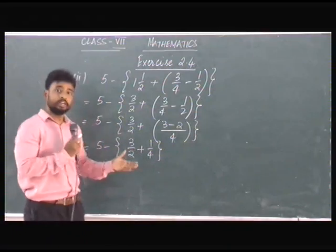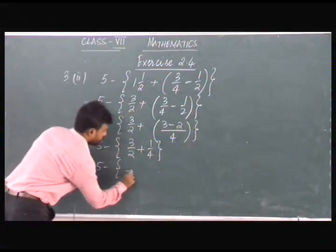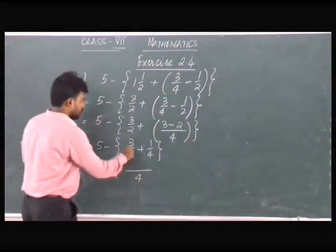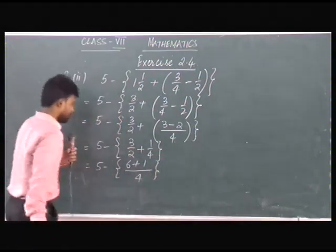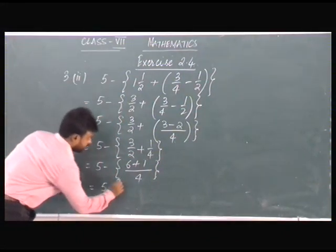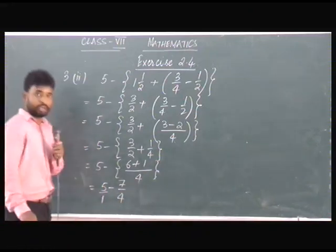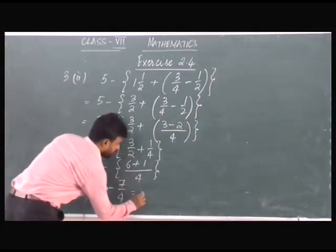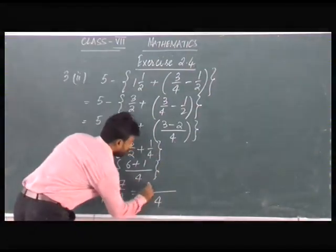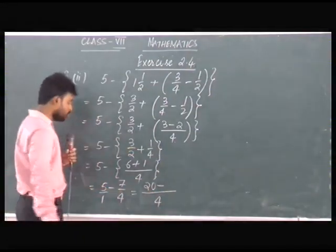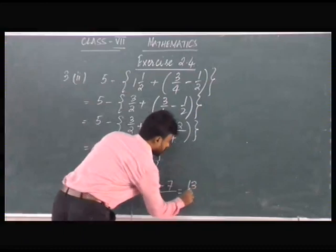Now we will solve what is there in the curly bracket. We have 3/2 plus 1/4. The LCM is 4. 2 will go 2 times, 4 will go 1 time. We will have 5 minus 7/4. You can write 5 as 5/1. The LCM is 4. 4 goes 5 times — 4 fives are 20. 4 will go 1 time into 4, and 1 into 7 is 7. Ultimately your answer will be 13/4.